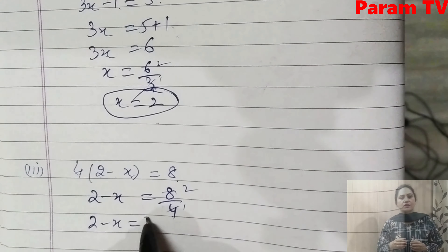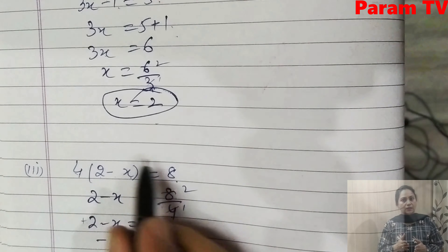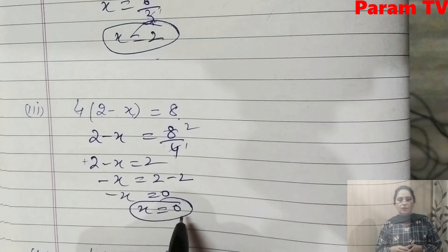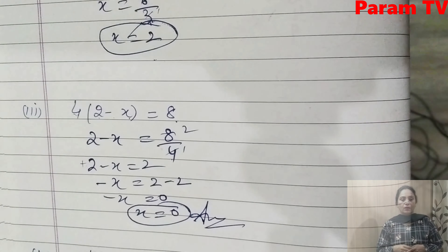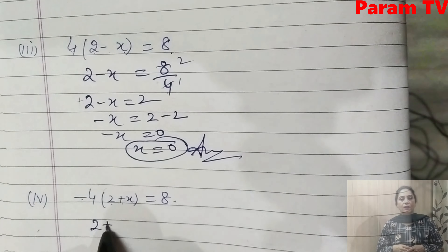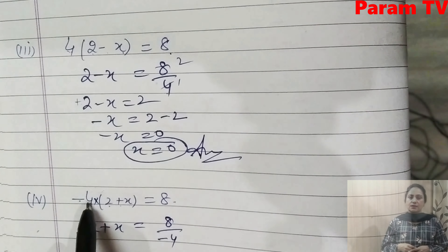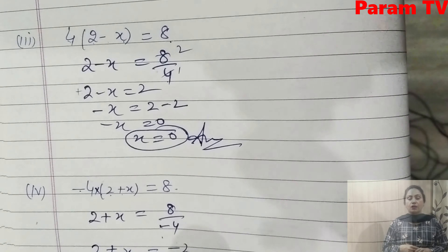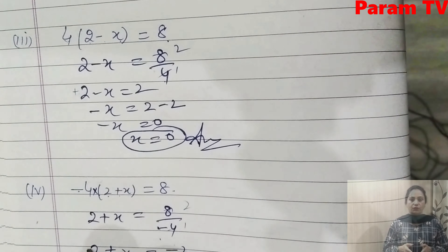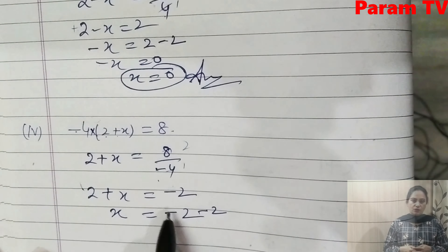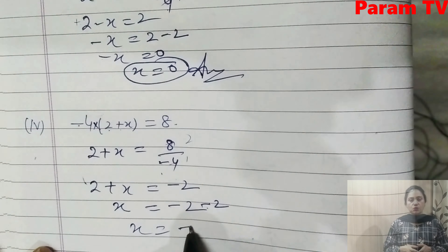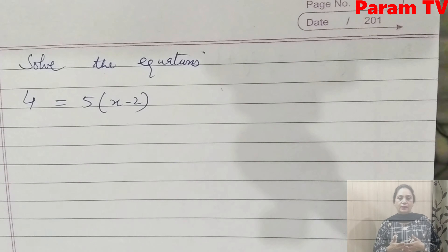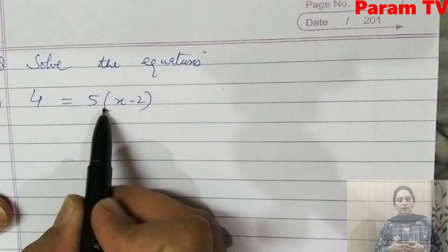Next: 4(2 - x) = 8. Divide by 4: 2 - x = 2. So -x = 2 - 2 = 0, meaning x = 0 is the answer. Then for -4(2 + x) = 8: divide by -4, giving 2 + x = -2. So x = -2 - 2 = -4. So x = -4 is the answer.